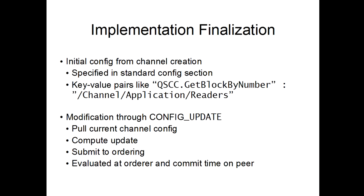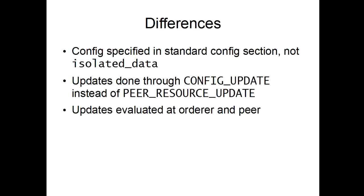The proposed finalization is very similar to today's with a few notable differences. We'll continue to specify the initial ACL config at channel creation time, but rather than in the isolated data section, it'll be in the normal config section. We'll continue to express ACLs as the same key-value pairs, but rather than updating through a peer resource update, we'll use a config update — pull the current config, modify it, compute the update, and submit it. The only difference is that the orderer does validation instead of simply the peer. So updates are now also evaluated at the orderer, not just the peer.